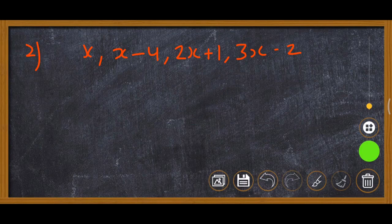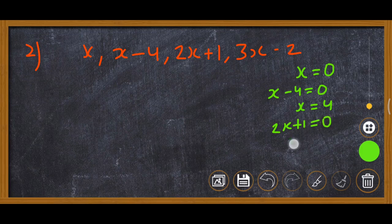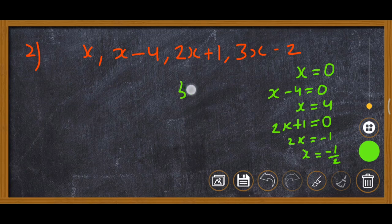We will take them equal to 0. First one: x equals 0. Second: x minus 4 equals 0, so x equals 4. Third: 2x plus 1 equals 0, then 2x equals minus 1, so x equals minus 1 upon 2. Then 3x minus 2 equals 0.